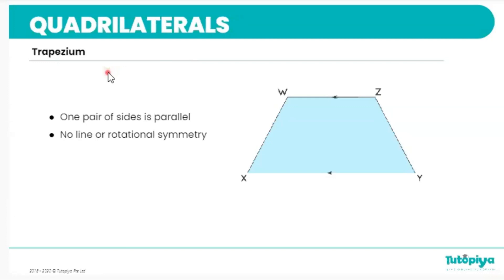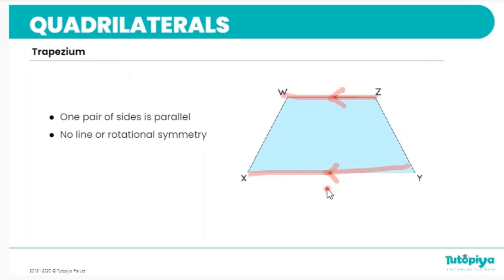The next quadrilateral is a trapezium. In a trapezium, there is one pair of opposite sides that are parallel to each other — only one pair, nothing more. Trapeziums generally do not have any lines of symmetry or rotational symmetry, except in one special case: the isosceles trapezium. If the non-parallel sides are equal in length, then the trapezium has one vertical line of symmetry down the center.